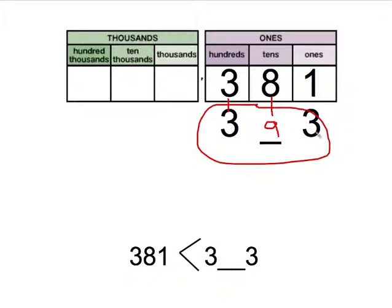I would assume then that 393 should be bigger than 381. If I put that value in for the missing number, I can see that indeed 381 is less than 393, because they both have 300s, but this only has 8 rods, or 8 tens, and this one has 9 tens.